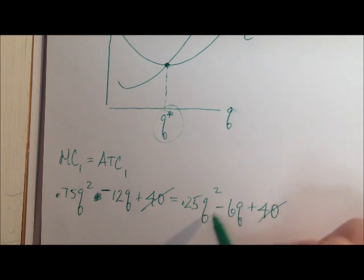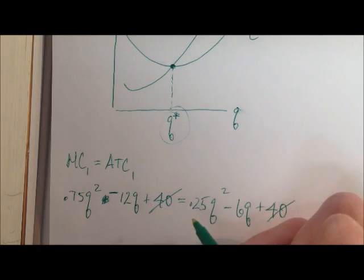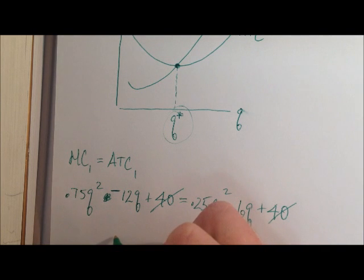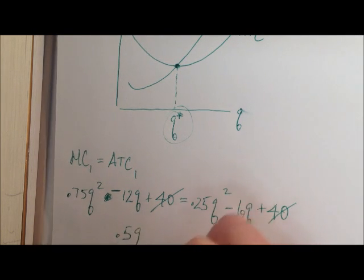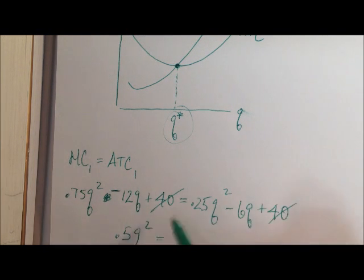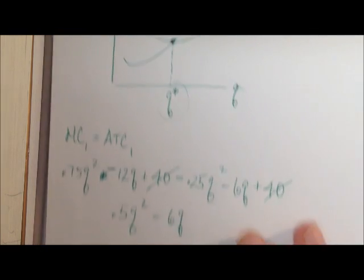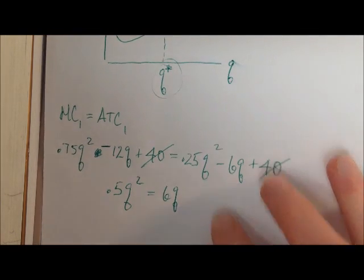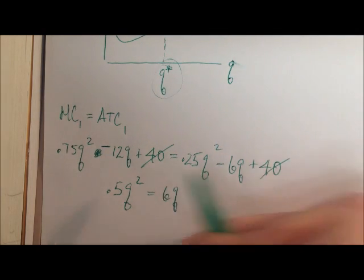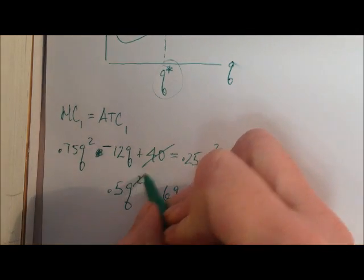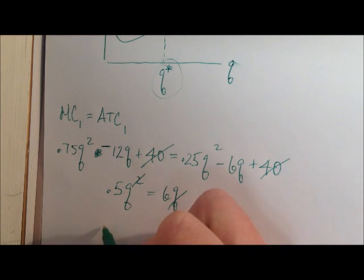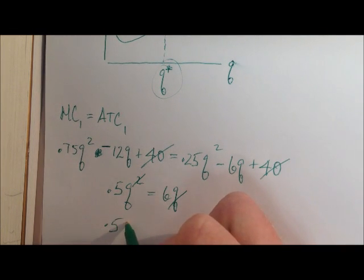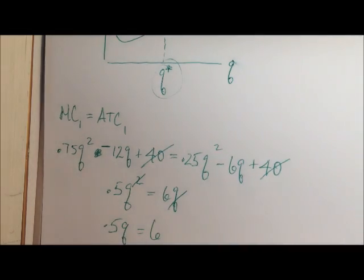I'm going to subtract the 0.25Q squared from both sides, which leaves us with 0.5Q squared over here. And then I'll add 12Q to both sides, which is going to leave me with 6Q over here. Then I can divide both sides by Q, which leaves me with 0.5Q equals 6.